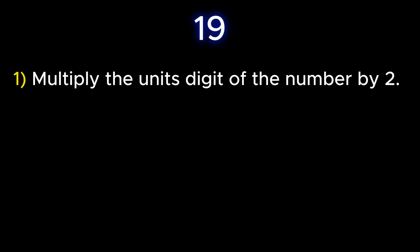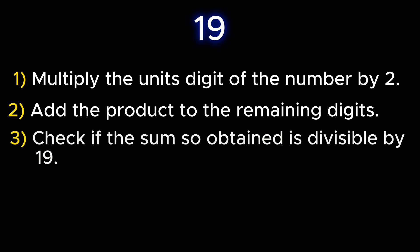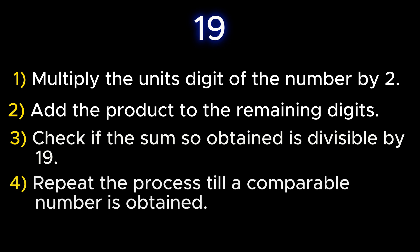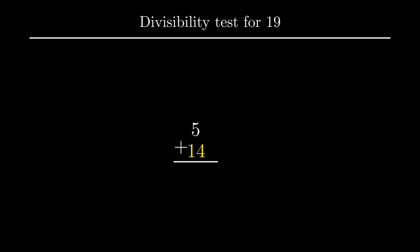Moving on to the next prime number, that is number 19. To check whether a number is divisible by 19, multiply the units digit by 2 and add it to the remaining digits. If the sum is divisible by 19, the given number is also divisible by 19; repeat until a comparable number is obtained. Consider the number 3819. The units digit 9 is multiplied by 2, giving 18, which is added to 381, giving 399. Repeating: 9 × 2 = 18, added to 39, gives 57. Further, 7 × 2 = 14, added to 5, gives 19. Since 19 is divisible by 19, the given number is also divisible by 19.